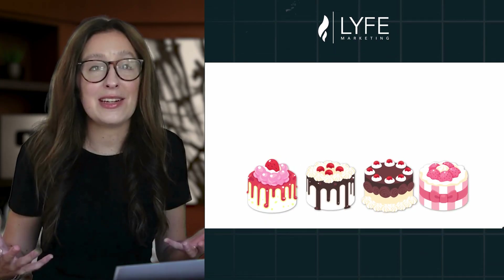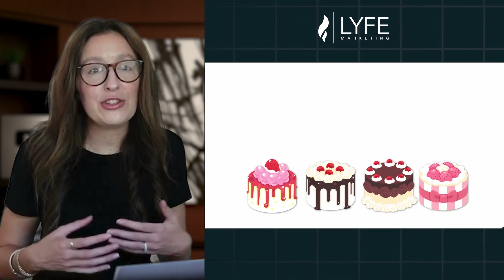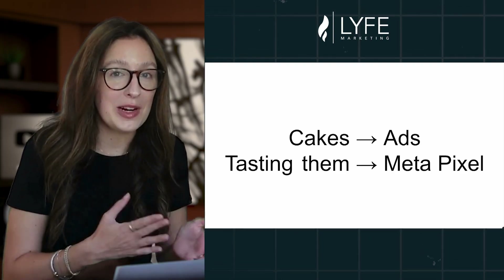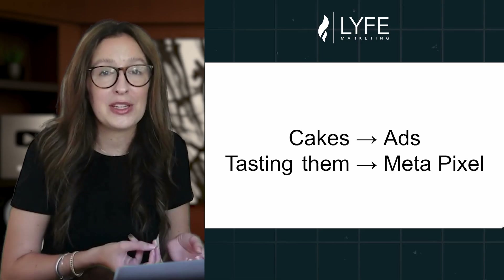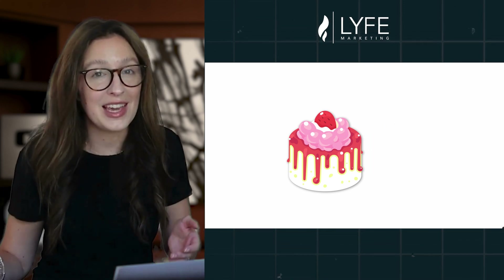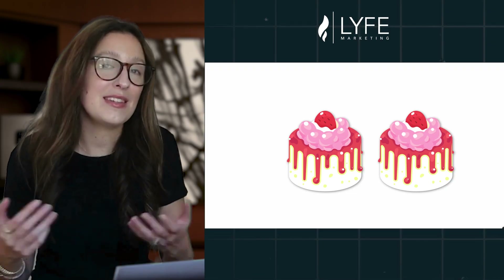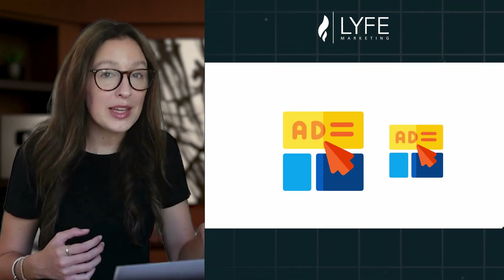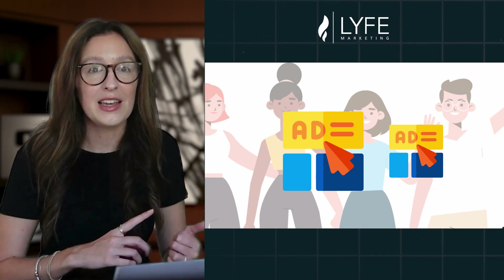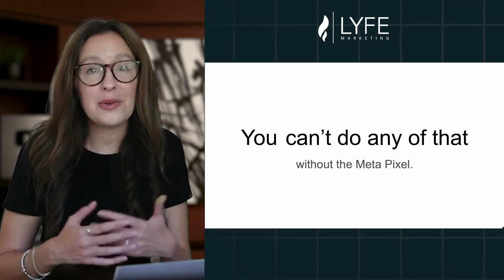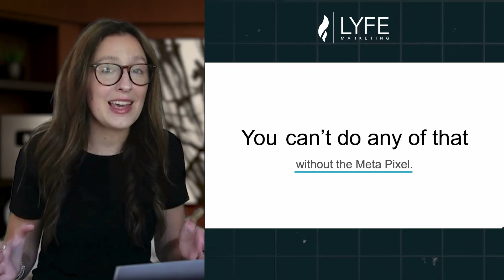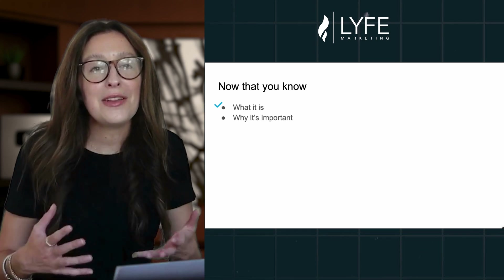It's like baking a bunch of cakes and never tasting any of them to know if they're good or not. You're just randomly serving these cakes to different people without knowing if they actually like them. Without the Meta Pixel, you're just randomly serving ads to a bunch of people without knowing if they're actually responding well to them or not. If you knew that people like your strawberry cake way more than your chocolate cake, you'd make more of the strawberry cake. It's the same thing with ads. If you knew that a certain ad resonated way better with your target market and converted them much better, you'd put more money towards the better ad. You can't do any of that without the Meta Pixel, so you end up spending a lot of money on ads that don't give you a return on your ad investment.